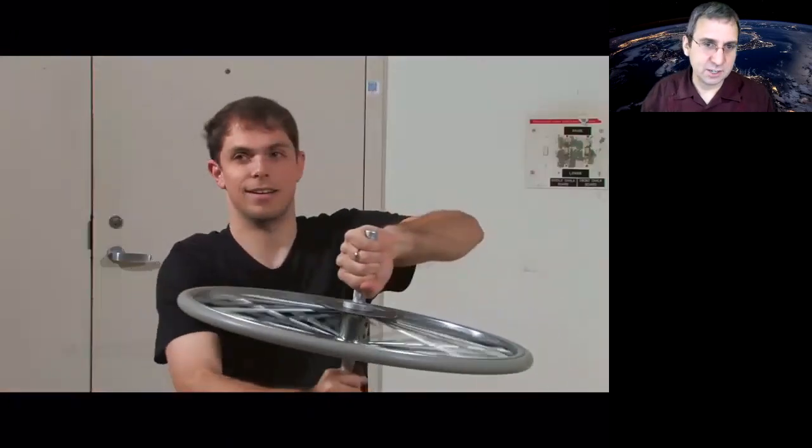And this is essentially how controlled moment gyroscopes work. The total angular momentum is the sum of the individual angular momenta. And it's weird. The bicycle wheel is imparting some kind of torque to him to make him move. And so, of course, you could use this effect in space.